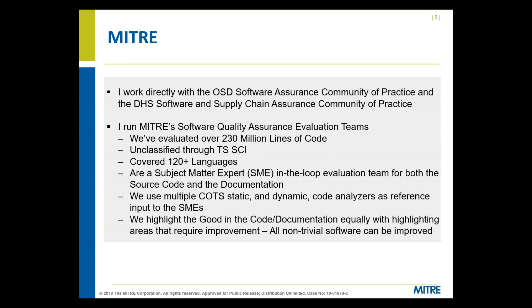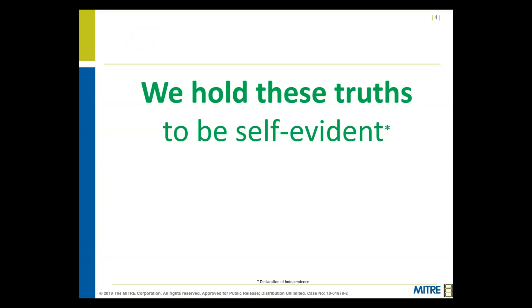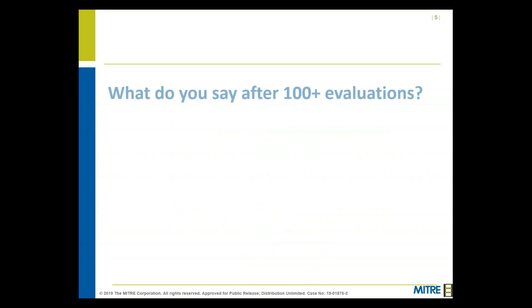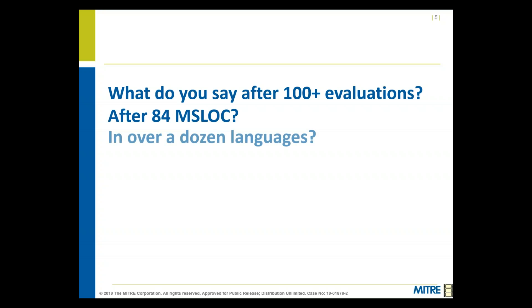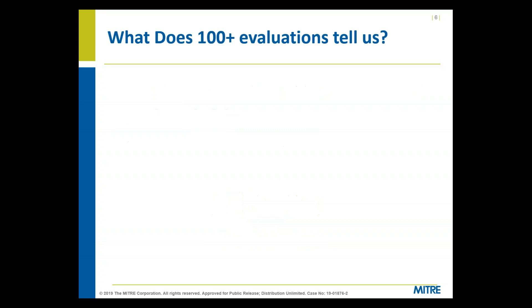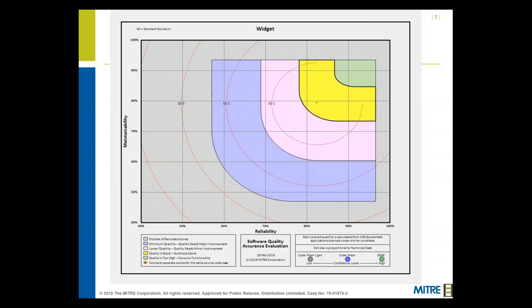We put all that together and come up with a hundred evaluations. We've heard phrases like 'we hold these truths to be self-evident' — my answer to that is: where's your data? Part of this research study was to come up with data behind the statements we make. After a hundred evaluations and over 84 million lines of code across a dozen different languages, what do the hundred evaluations tell us?